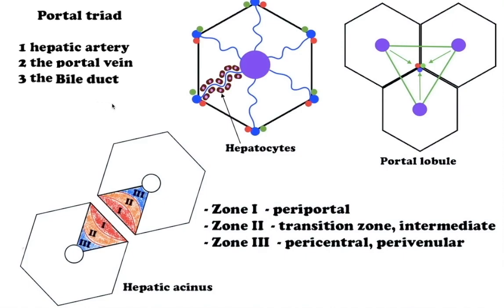Hepatocytes are the chief functional cells of the liver and perform numerous metabolic, endocrine, and secretory functions. The hepatic acinus is the functional unit of the liver. The acinus has an elliptical or diamond shape and is divided into zone 1 (periportal zone), zone 2 (transition or intermediate zone), and zone 3 (pericentral or perivenular zone).